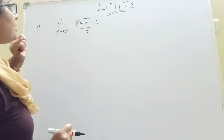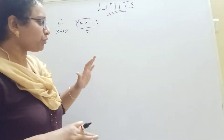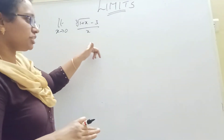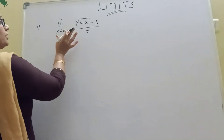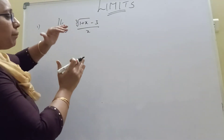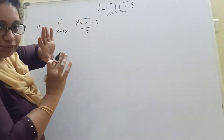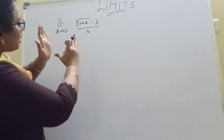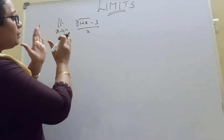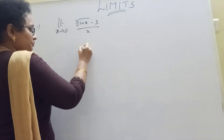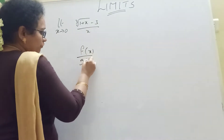Limits are very important and we will show you the shortcut. It is called the minimum. The minimum value is applied. Shortcut limits are here. Suppose you have the minimum — f of x by g of x. The minimum value is a fraction.